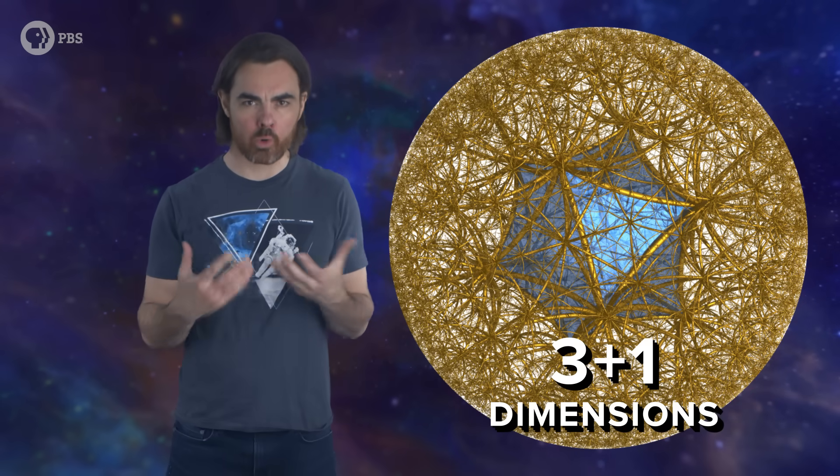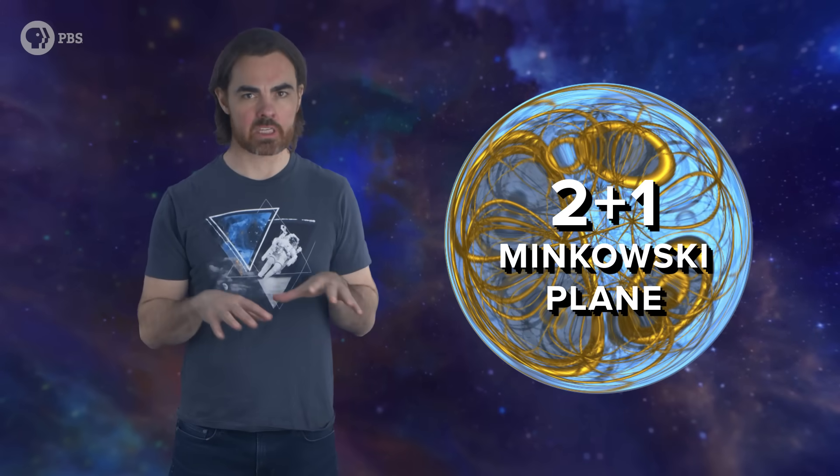You can extrapolate to any number of extra dimensions, say a 3 plus 1 dimensional Poincaré ball. Compactify it so the infinite boundary becomes a surface. That surface is a 2 plus 1 Minkowski plane.